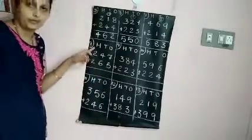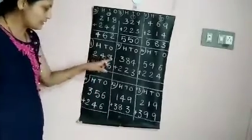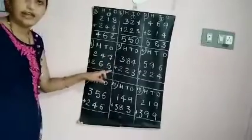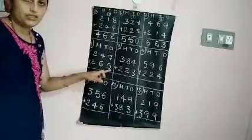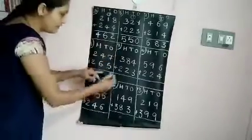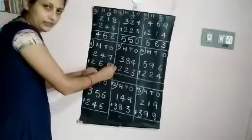Let us see problem 8 one. You have 247 plus 265. Here let us add the ones first. 7 plus 5.